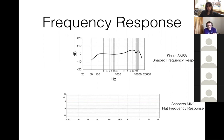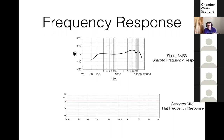A shaped frequency response will make a more specific sound. The diagram at the top of my slide shows a microphone that boosts high frequencies, making the sound brighter — designed to help it cut through a texture. That's for a handheld vocal mic, the Shure SM58. The mic on the bottom is designed specifically for recording classical music and is advertised as having an absolutely flat frequency response, which is good for capturing an orchestra where you don't want to lose the double basses or cellos.